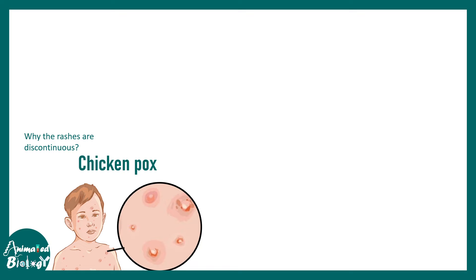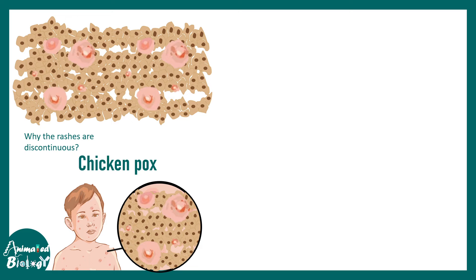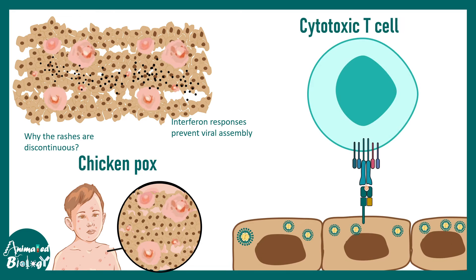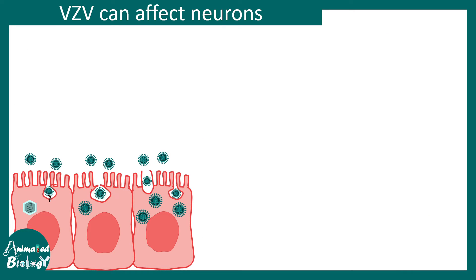Why are the rashes discontinuous and not spread across all the skin? Specific cells in the skin secrete interferons that interfere with viral assembly, ensuring only a few cells are affected while nearby cells are spared. Additionally, CD8-positive cytotoxic T cells recognize viral peptides presented on class 1 MHC molecules, which leads to production and secretion of cytotoxic granules, causing apoptosis of virus-infected cells. This is how the body fights back, and the infection resolves on its own with time.